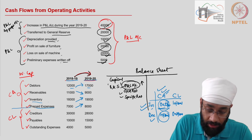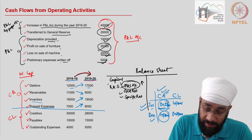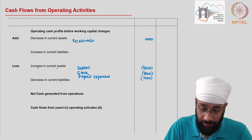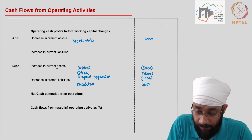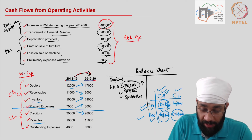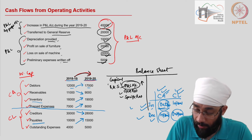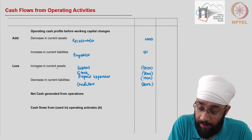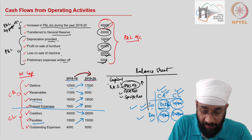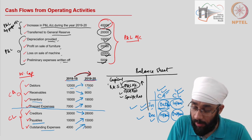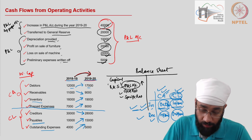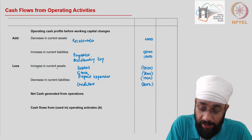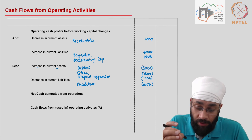We are done with current assets. Now for current liabilities: creditors are going down by 2,000 — a decrease in current liabilities is an outflow — so creditors 2,000 is deducted. Payables are going up — current liability going up is an inflow — so payables 5,000 is an inflow. Finally, outstanding expenses are also going up — current liability going up is an inflow — so outstanding expenses 1,000 is an inflow. That completes all the working capital adjustments.